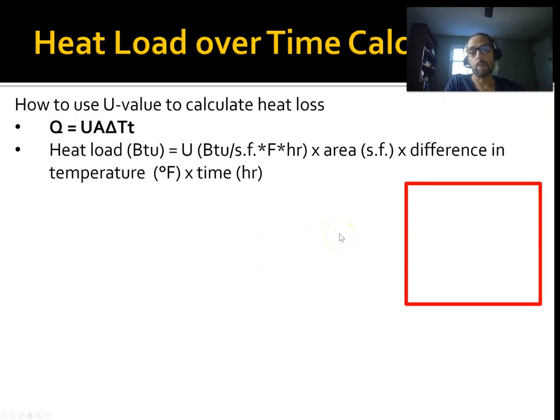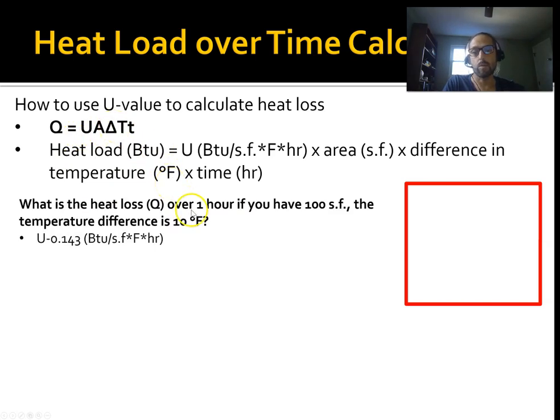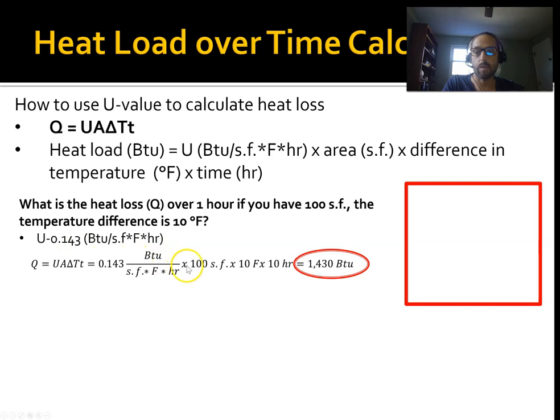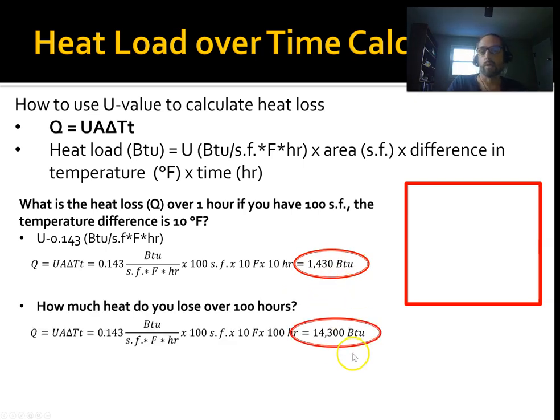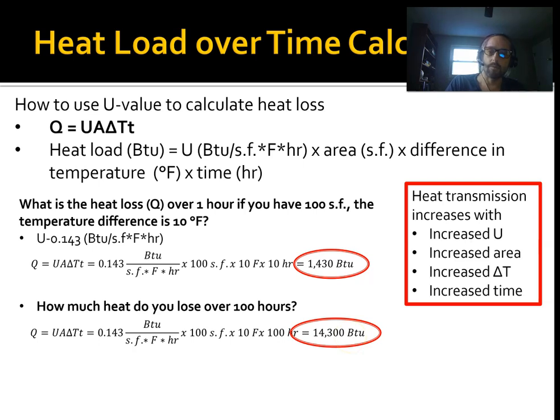You can do the same, similar calculation over any period of time. If you have any number of hours at a given delta T, you can calculate the heat loss over that time. And that's just UA delta T times time in hours. What's the heat loss over one hour if you have 100 square feet, and the temperature difference is 10 degrees at a 0.143 U? It's just UA delta T times T. So U 0.143 times 100 square feet times 10 degrees times 10 hours, and we end up with, notice this is BTUs, not BTUs per hour. How much heat do you lose over 100 hours? Same thing, but it's going to be increased by a factor of 10. Heat transmission increases with increased U, increased area, increased delta, like before, and increased time.